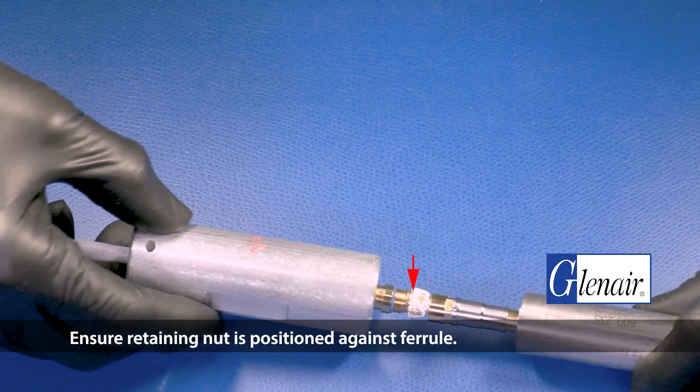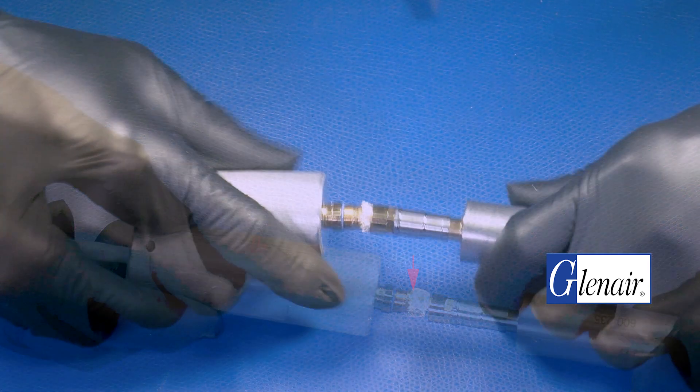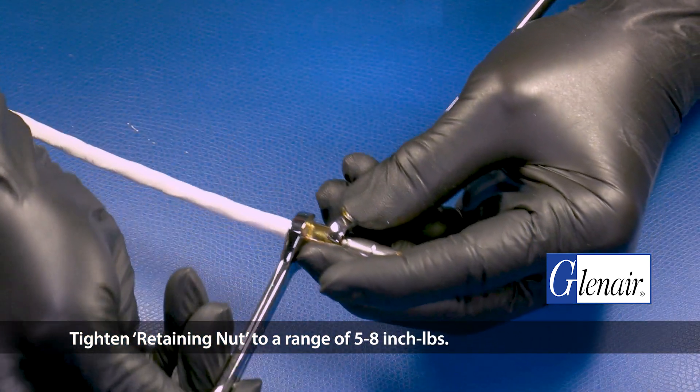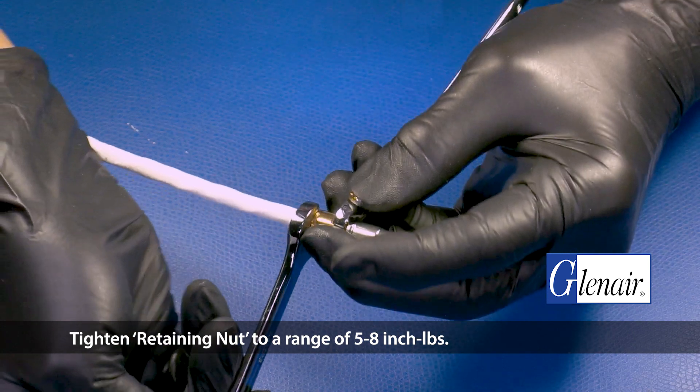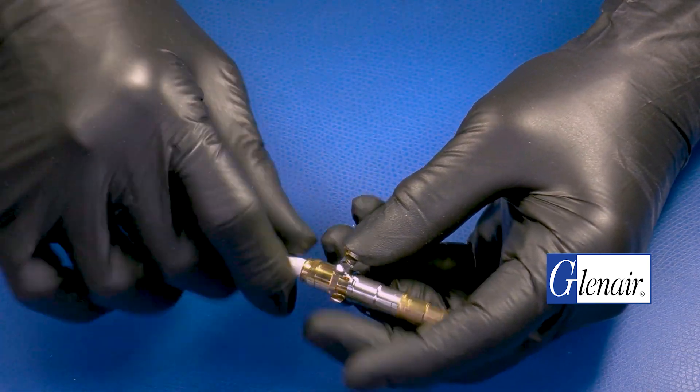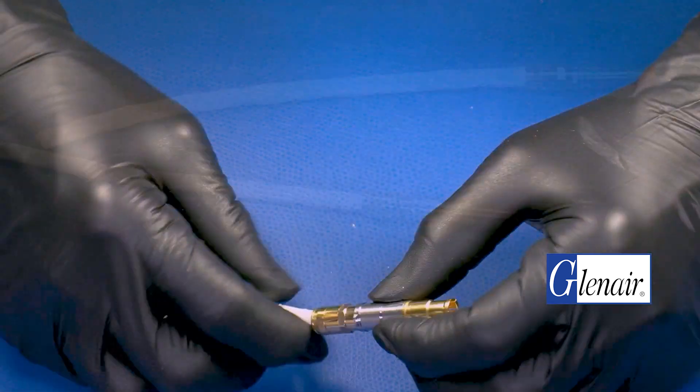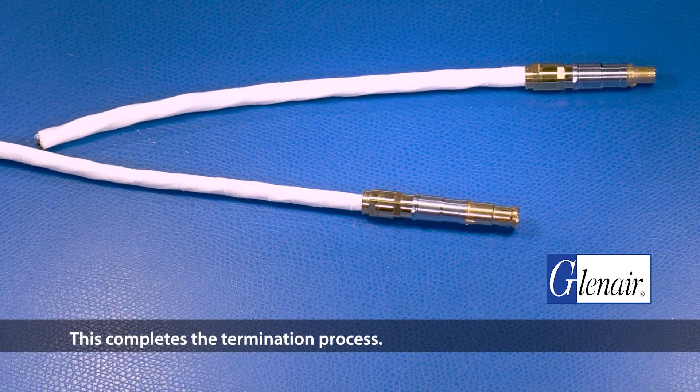Ensure retaining nut is positioned against ferrule. Press contact assembly into outer body housing. Tighten retaining nut to a range of 5 to 8 inch pounds. This completes the termination process.